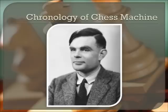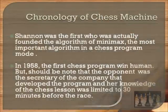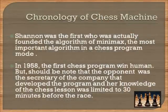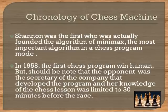Since there was as yet no machine that could execute the instructions, he did so himself, acting as a human CPU and requiring more than half an hour per move. Another important mathematician is Shannon, who was the first to actually found the Minimax algorithm, the most important algorithm in a chess program.